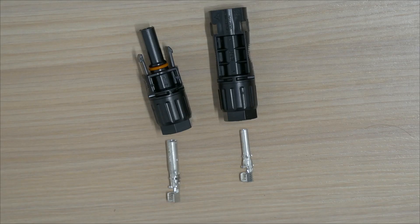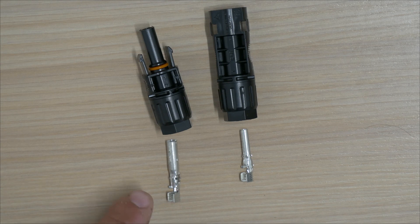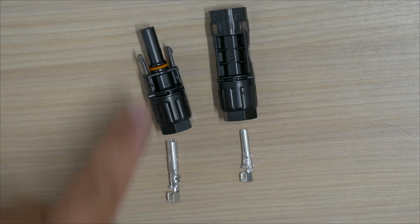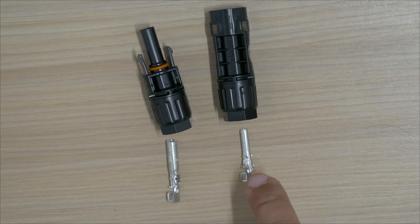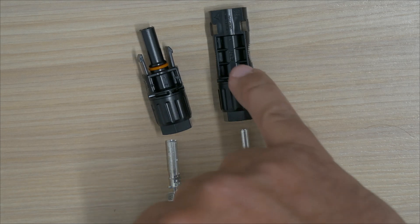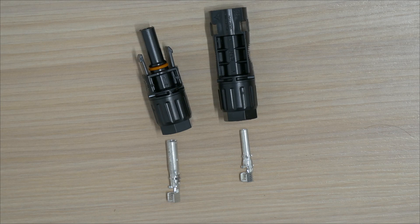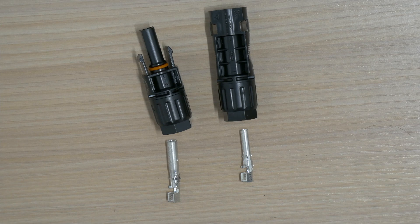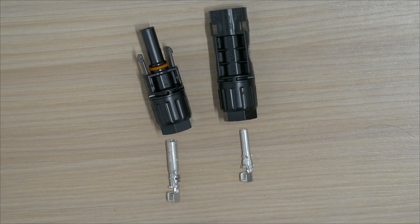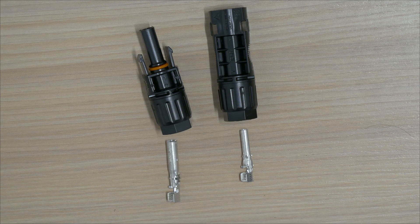So you can see we've got our two different crimps laid out. This larger, what I would call female, is going into what I would call a male plug. And the smaller, male-style pin is going to go into this female plug. So we need to prepare the end of our cable now, ready to put the crimp on. But before we get to that stage, we also need to put the back of these glands onto the cable first.